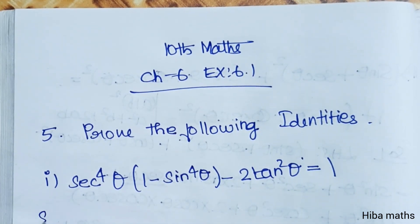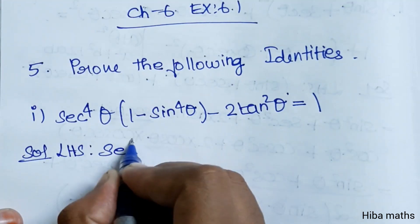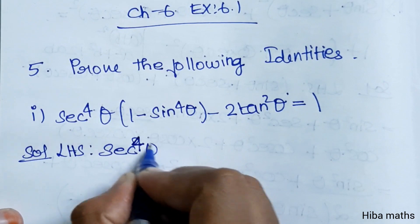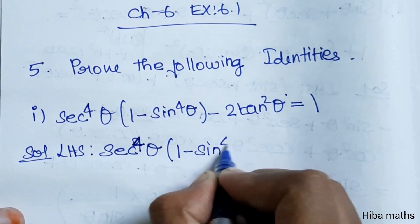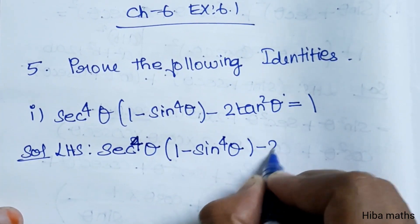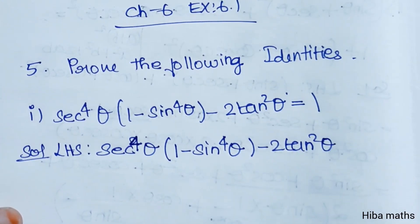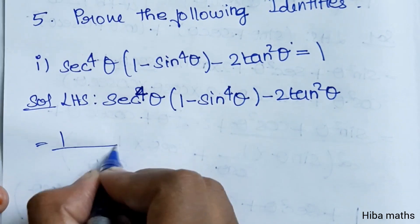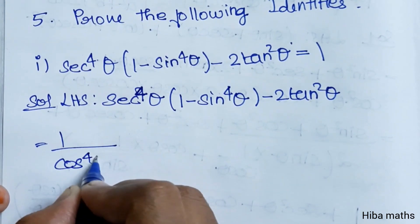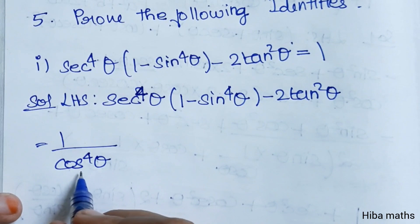Let's prove LHS. LHS is equal to sec⁴θ into (1 minus sin⁴θ minus 2tan²θ). Now secant equals 1 by cos, so sec⁴θ equals 1 by cos⁴θ.